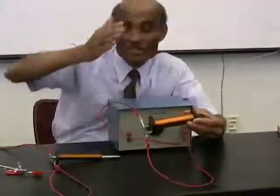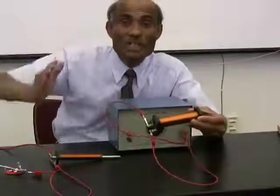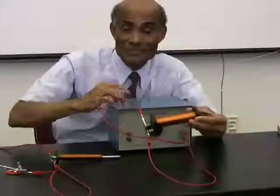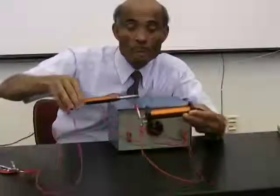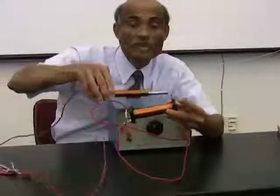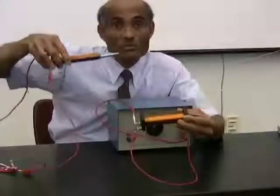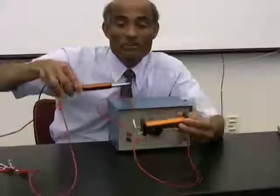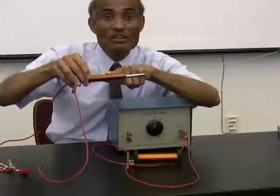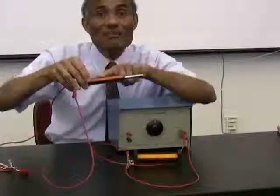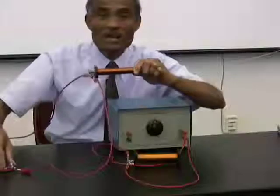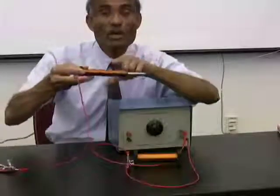Remember, AC is continuously changing — growing, decaying, growing, decaying — at a tremendous rate, about 60 times a second. If we have another coil inside the first coil and use an iron core to magnify the magnetic field, then the magnetic flux linked with the secondary coil will be continuously changing, and we would expect an EMF and hence a current to be induced in it.